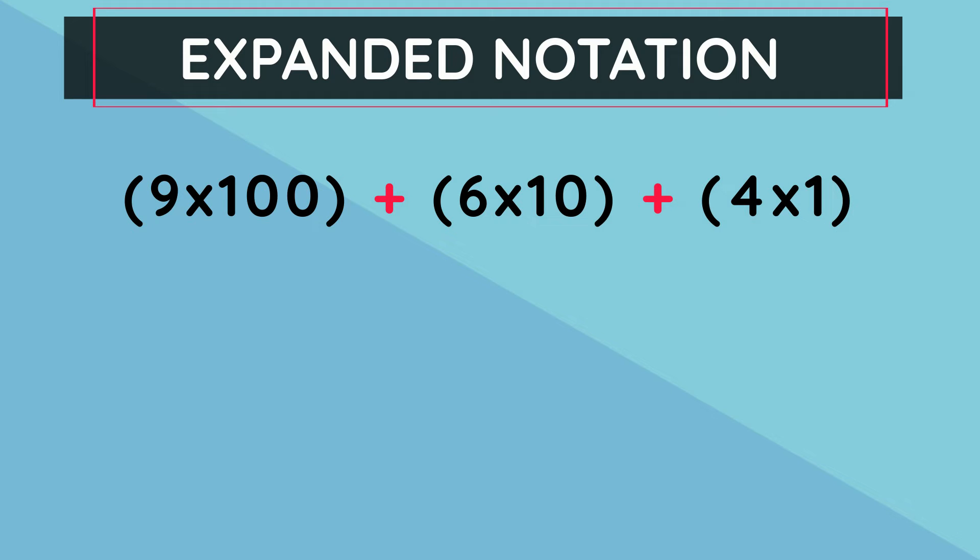Well, 9 multiplied by 100 gives us 900. 6 multiplied by 10 gives us 60. And 4 multiplied by 1 gives us 4. And if we add them all up, that's 900, add it to 60, add it to 4. So we get 964.